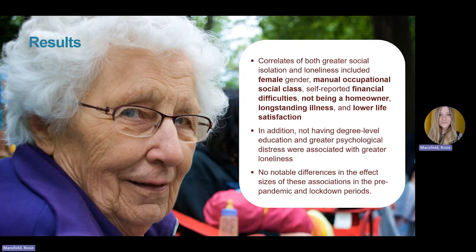When investigating the demographic, socioeconomic, and health characteristics associated with isolation and loneliness, we found that female gender, manual occupation, self-reported financial difficulties, not being a homeowner, having a limiting long-standing illness, and lower life satisfaction were consistently associated with both isolation and loneliness. For loneliness, not having a degree and greater psychological distress were also associated. We didn't see notable differences in the strength of associations pre-pandemic and during lockdown, indicating that these inequalities existed prior to COVID and were maintained and slightly exaggerated by the pandemic.